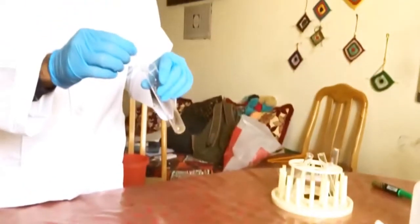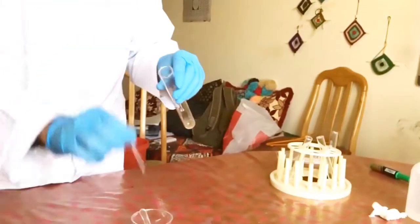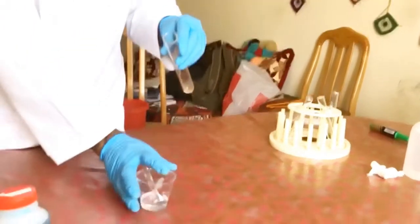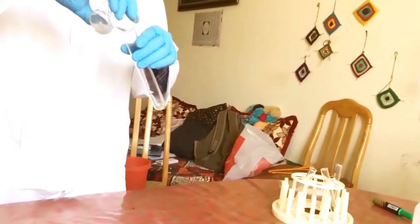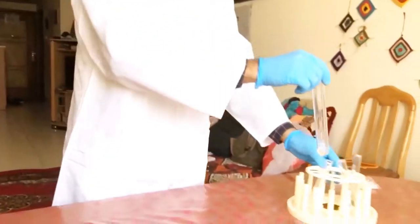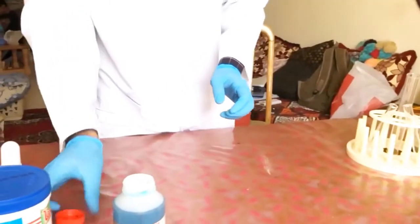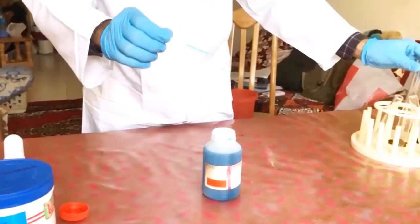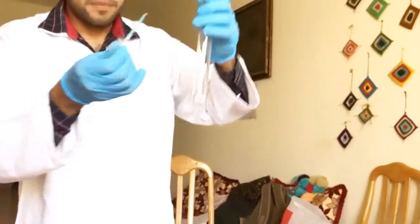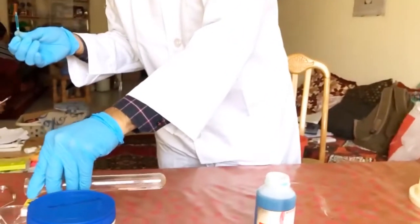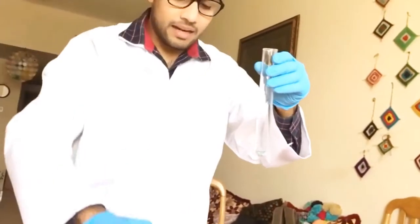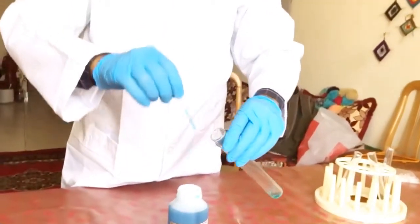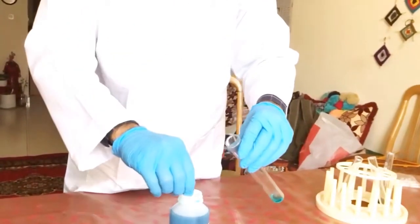Next is to keep this aside and take our benedict solution. Again we'll be measuring the same equal quantity amount. We want double the amount of the sugar solution, so I will keep adding till I find that the quantity is double of my sugar solution.